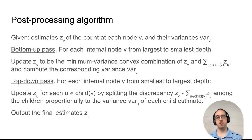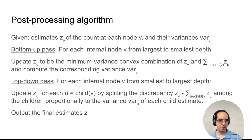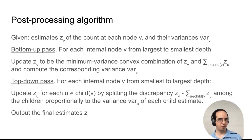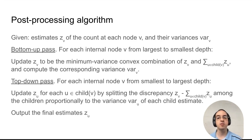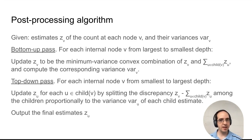This gives us the optimal estimate of the value of every node based on the estimate of that node and each of its children. But we also get information about the value of a node from the estimate of its parent, its siblings, and other nodes higher in the tree and in other parts of the tree. So to take that into account, we do a second pass through the tree.